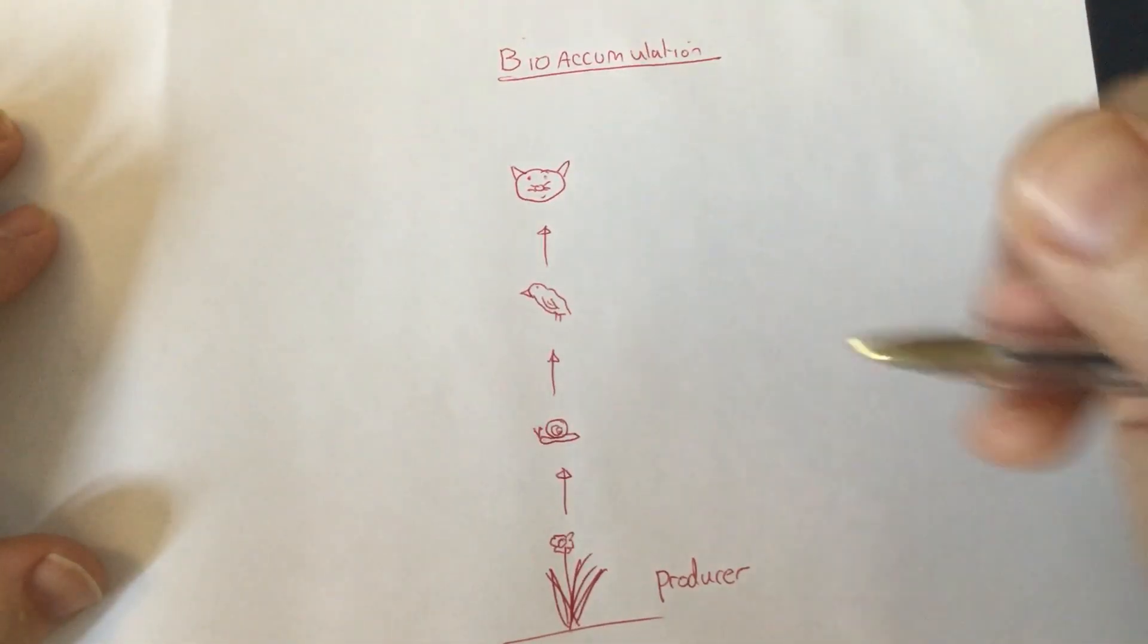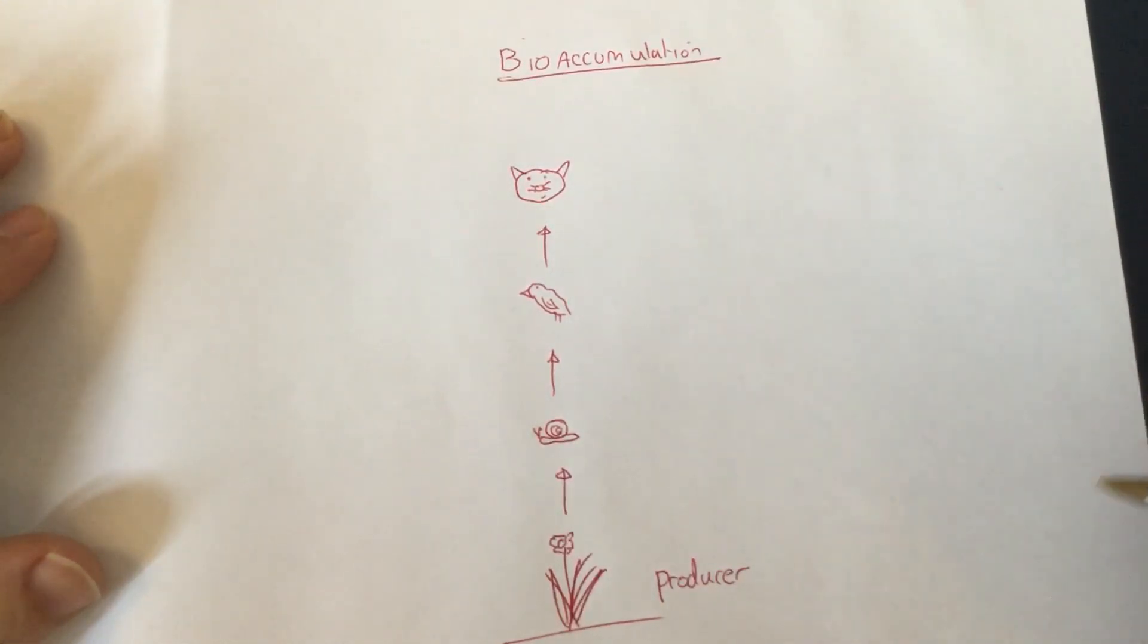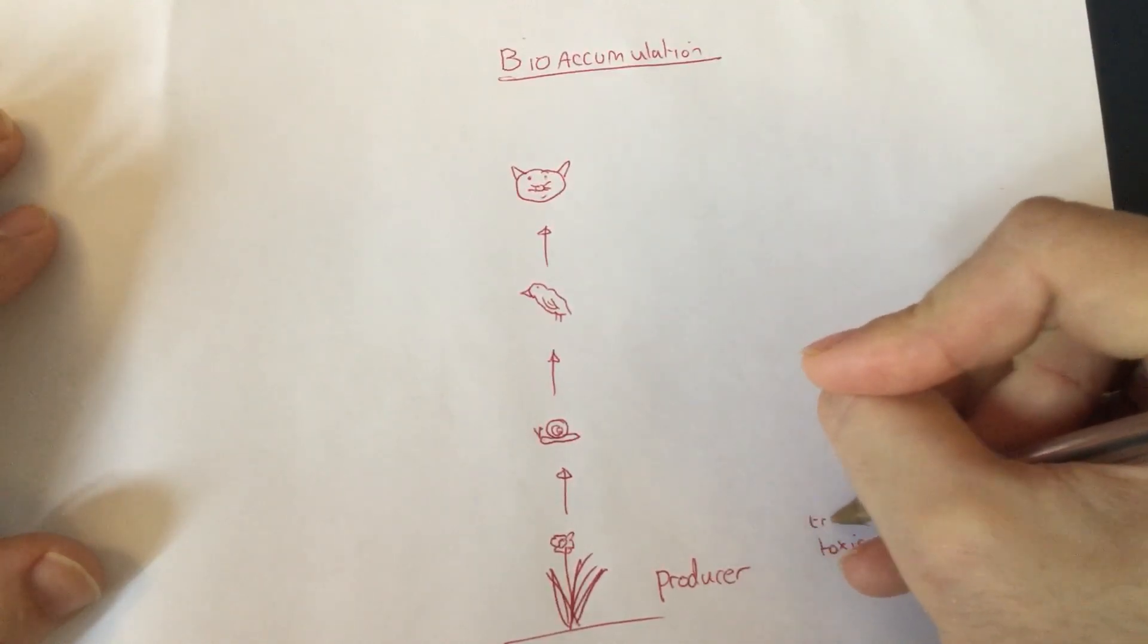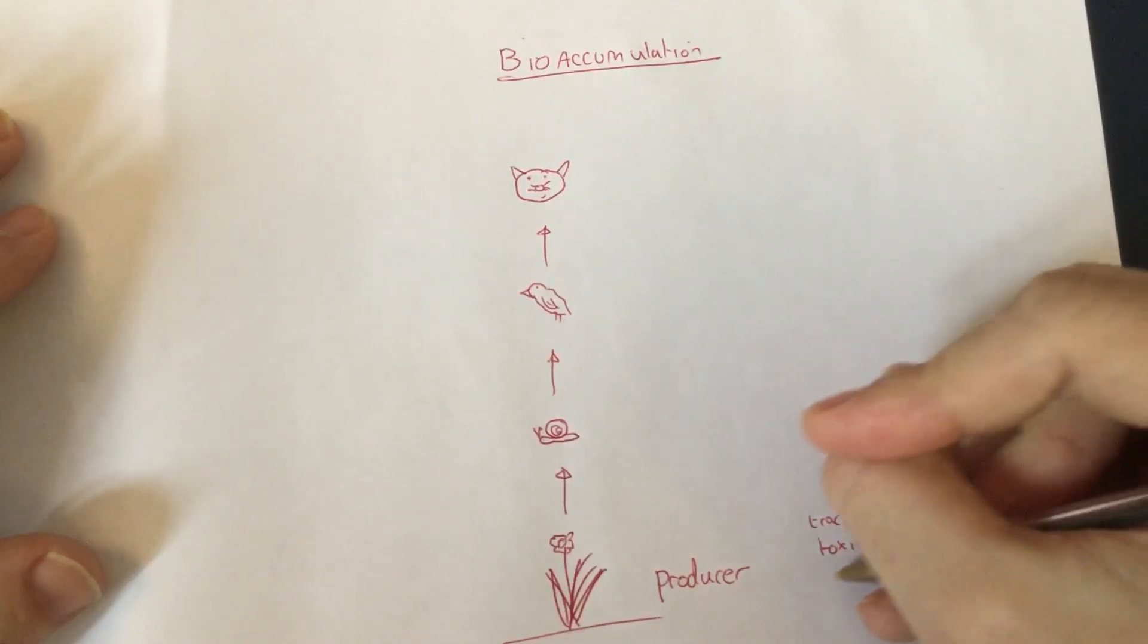Now the problem arises when we get something toxic building up. So let's say we've got a little bit of toxic material here. And we're going to call that a trace because that means a little bit. Trace of toxic material.